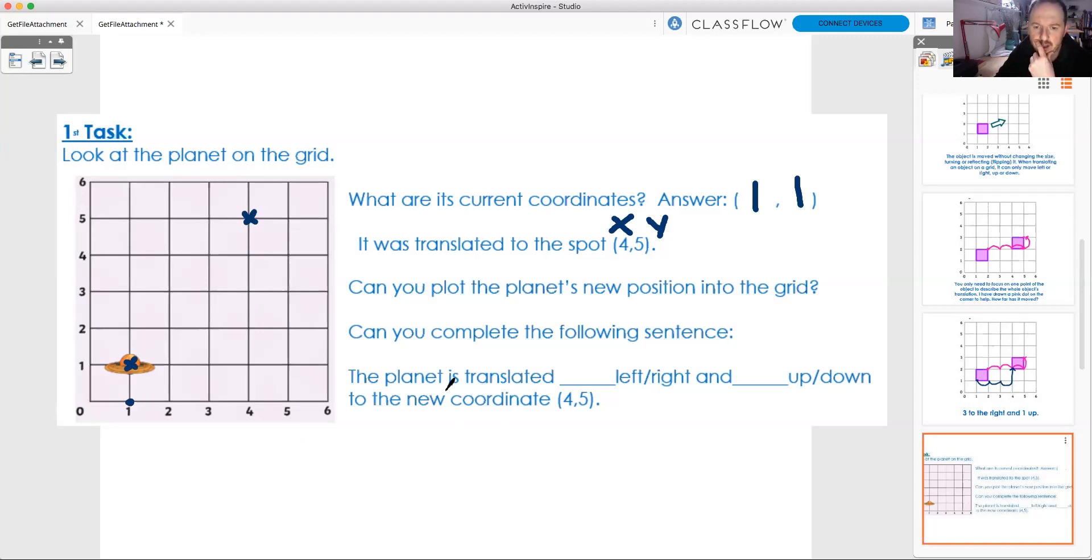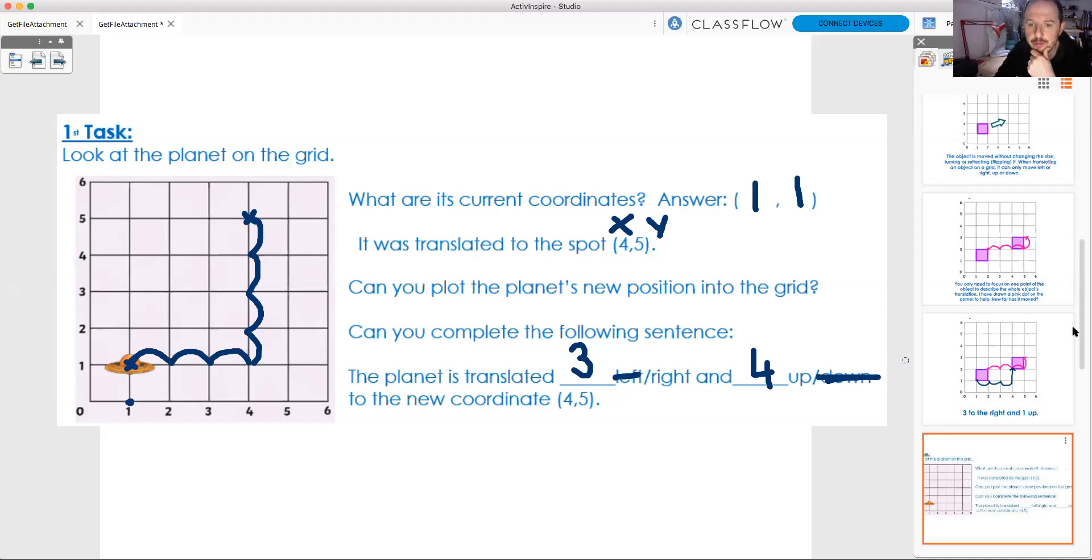So, the following sentence says, the planet is translated what, left or right, and what, up or down, to the new coordinate, four, five. So, if I take one, one, and I'm going to count on to see where I've got to, and then count up to see where I get up to as well. So, I'm going to go on the x-axis. I'm going to count one, two, three. So, it's gone three to the right. I'm going to write down three. Then I'm going to cross out left. I don't need it. Three right, and how many up? One, two, three, and four. And four up. Cross out down. Don't need it just now. And that's answering the question. So, we've described the shape, in this case, a planet. Its translation from one, one to four, five. And it moved three to the right, and four up.